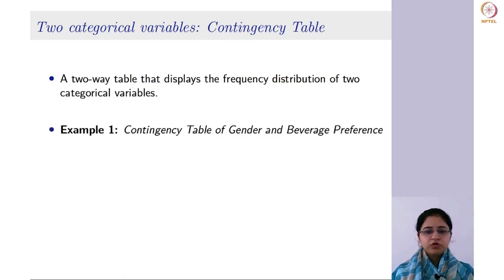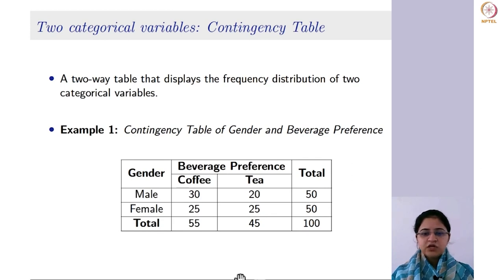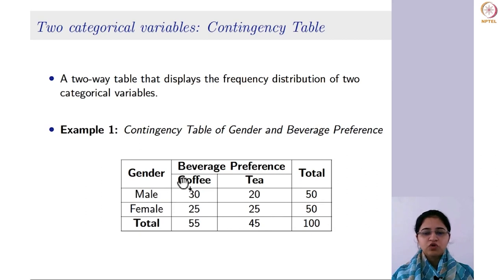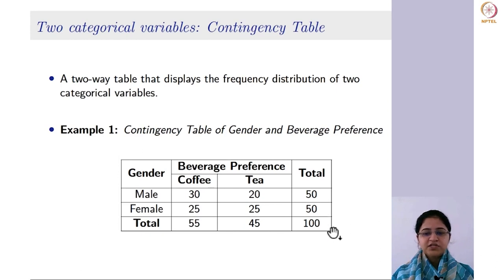For instance, if you want to draw a contingency table of gender and beverage preference — gender is a categorical variable with categories male and female, and beverage preference has categories coffee and tea. The first column is for gender with rows for males and females, and the columns have coffee and tea with counts for each combination. The totals at the bottom are column totals — 30 plus 25 gives 55, and 45 — while row totals are 30 plus 20 equals 50, and 100 is the total number of individuals.